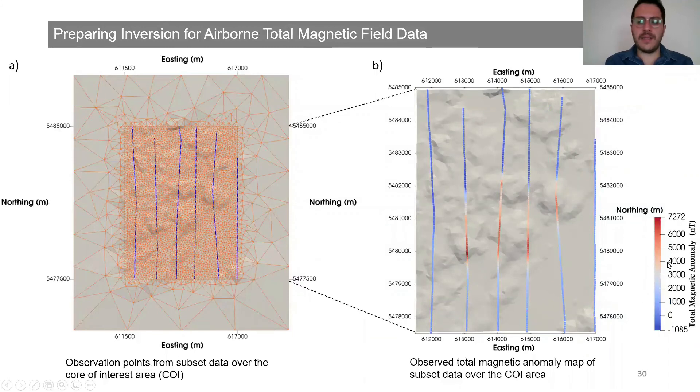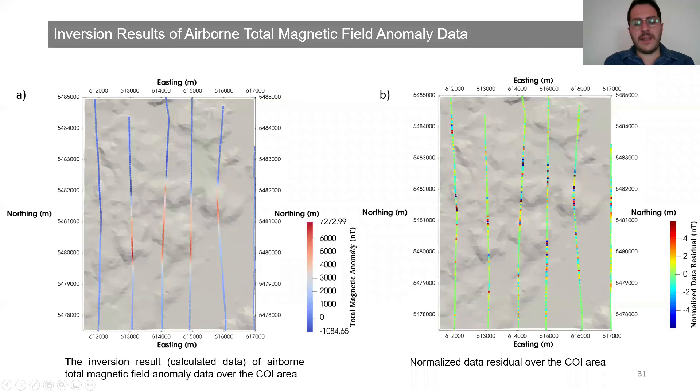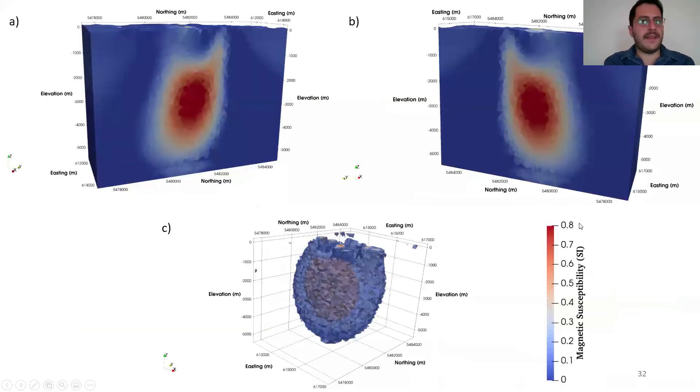We can see from figure A that the calculated data and observed data, if you look at the scale, we did have pretty consistency. To prove that we can look at the normalized data residual, which is the differences between observed and calculated data. If we look at the zero again, it represents the green color. And we had pretty consistency for the result of the inversion.